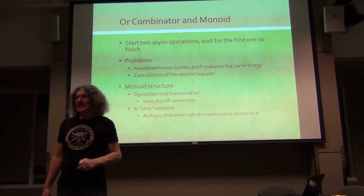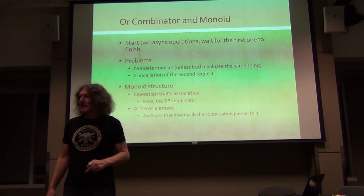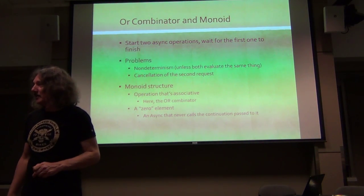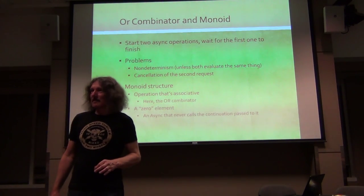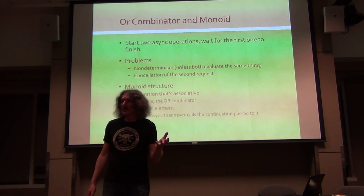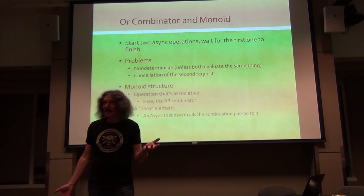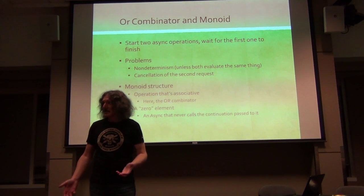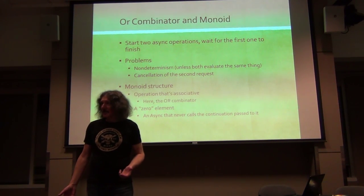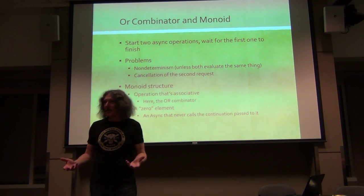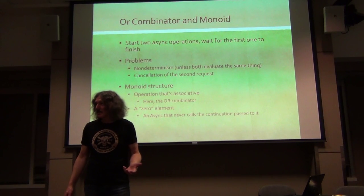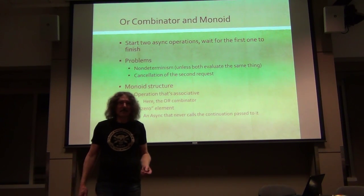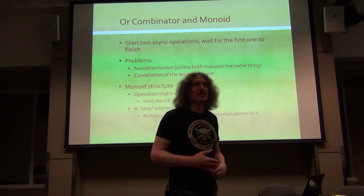Zero is needed as a special case - as a default for some algorithm. You get a default value: if you don't provide another async, I'm just going to use zero. I'm normally using the OR combinator for two asyncs, but I don't have the second one in this particular case - maybe for the end of a recursion.